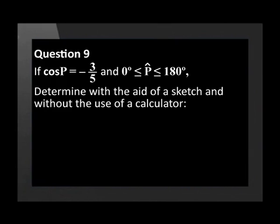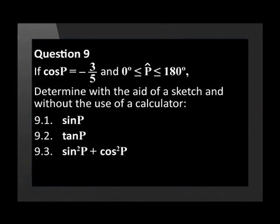Let's move on to some questions involving basic trig equations. Question 9. If cos of P is equal to negative 3 over 5, and angle P is greater or equal to 0 degrees and less than or equal to 180 degrees, determine without the use of a calculator the value of sine P, the value of tan P, and determine sine squared P plus cos squared P.